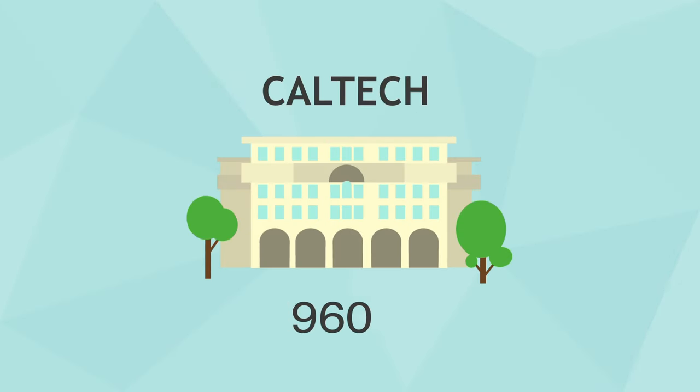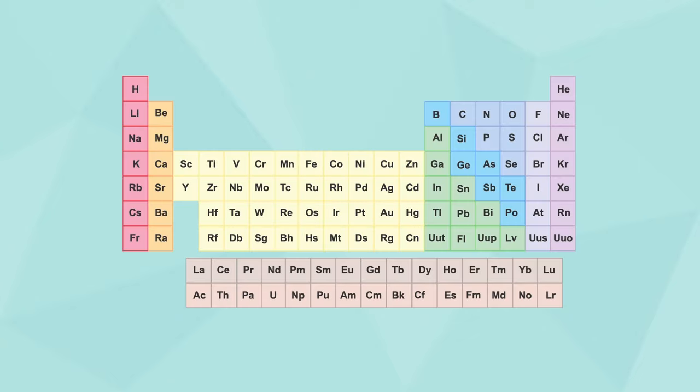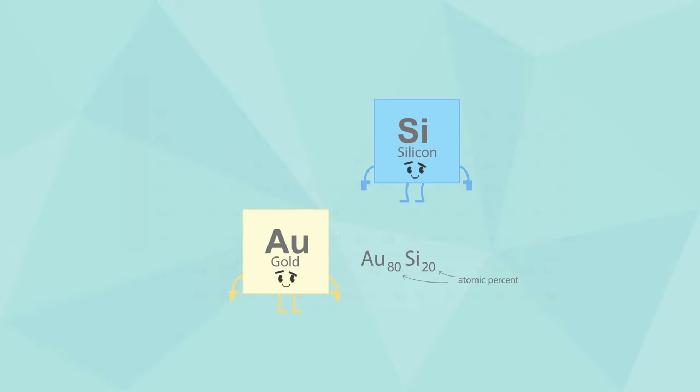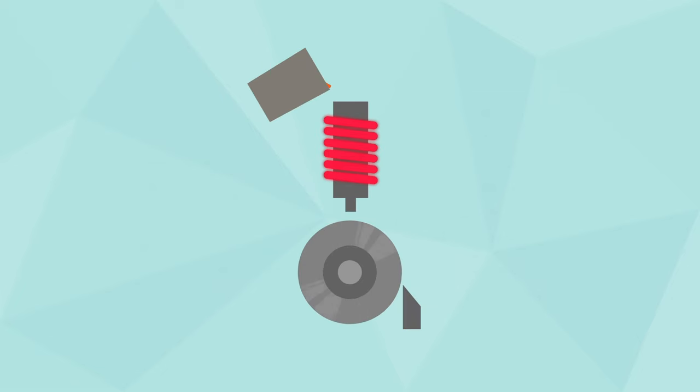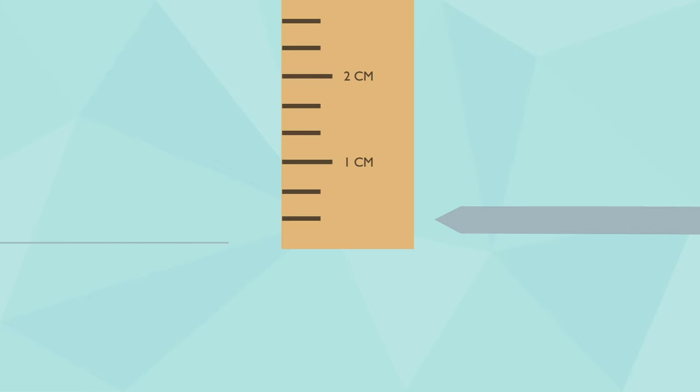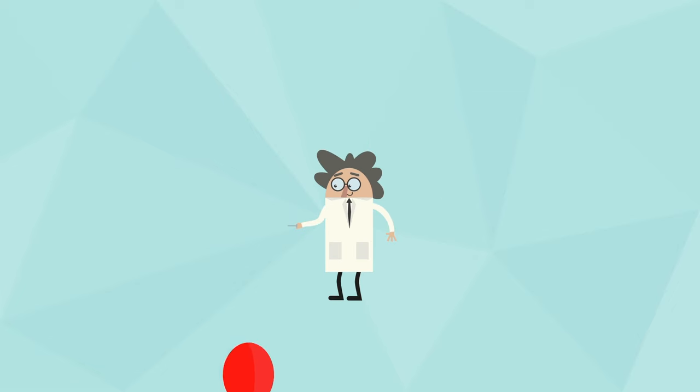The first metallic glass was made in 1960 from gold and silicon. It wasn't easy to make. Because metal atoms crystallize so rapidly, scientists had to cool the alloy down incredibly fast, a million degrees Kelvin per second, by shooting tiny droplets at cold copper plates or spinning ultra-thin ribbons. At that time, metallic glasses could only be tens or hundreds of microns thick, which was too thin for most practical applications.